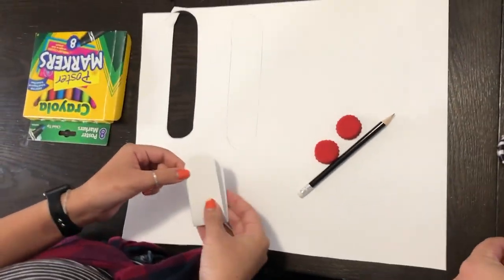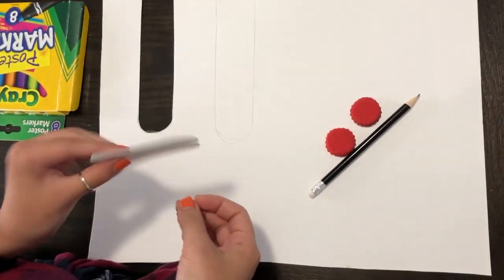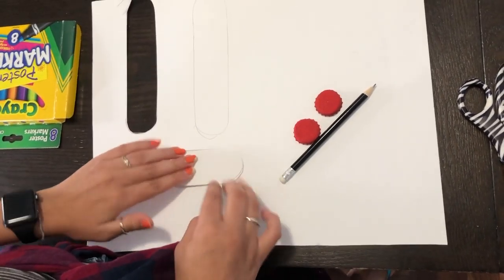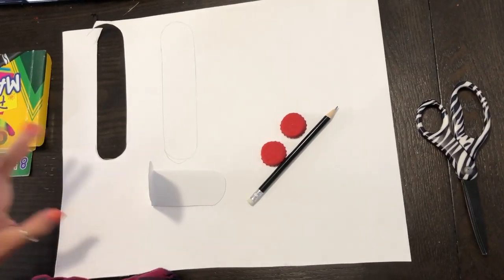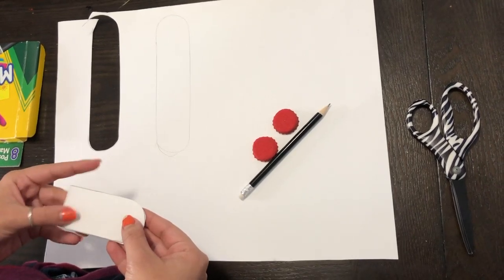I'm just gonna fold it in half, and then once you fold it in half you're gonna need some hot glue. So whoever's helping you can plug in the hot glue gun and warm it up, and remember you have to be very, very safe and careful with a hot glue gun because you don't want to accidentally burn yourself.